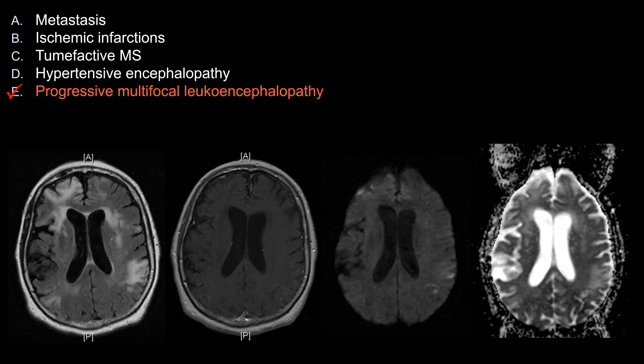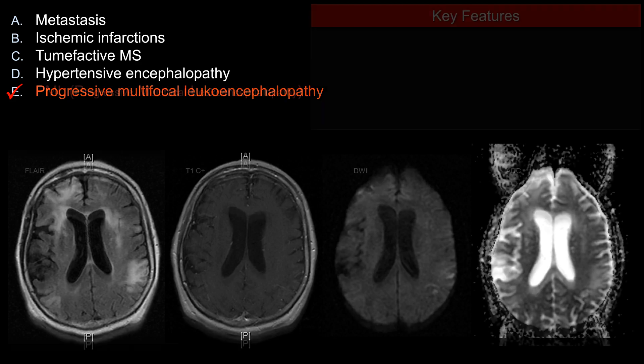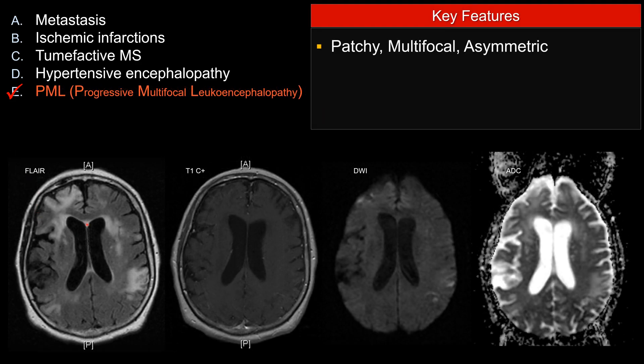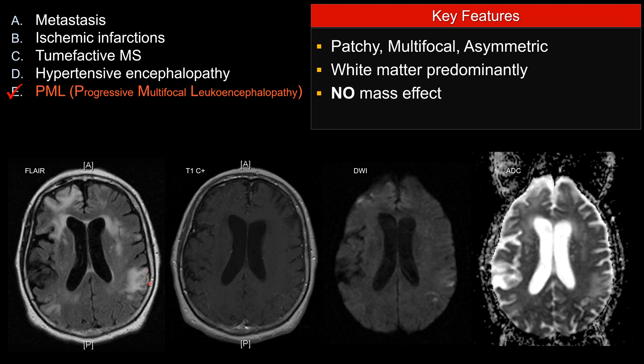The best choice is E, PML. Let's look at some of the features that make PML the best answer here. You can see on FLAIR there are multiple patchy T2 FLAIR bright lesions that center within the white matter with involvement of subcortical U-fibers as well as some cortical involvement. The lesion has very little mass effect, so that distinguishes it from other neoplasms.